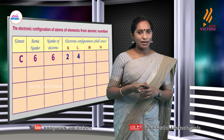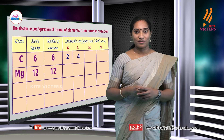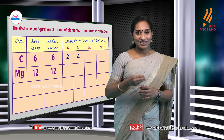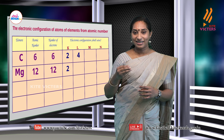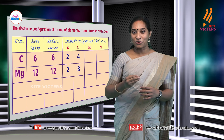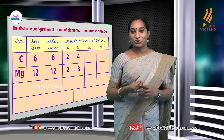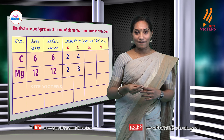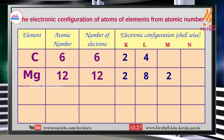Let us take magnesium, whose atomic number is 12. Try to write it. The first 2 electrons move to K shell. Then the next 8 electrons move to L shell, because L shell can hold a maximum of 8 electrons. The remaining 2 electrons move to M shell. So the electronic configuration of magnesium is 2, 8, 2.